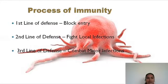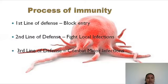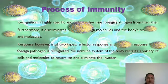The process of immunity can be divided into three lines of defense. The first line of defense aims to block the entry of invaders such as pathogens and germs — for example, the skin. The second line of defense is to fight local infection; whenever there is a wound, the skin itself forms its line of action. The third line of defense is to combat major infections in the body when there is large damage due to a pathogen.